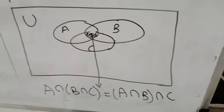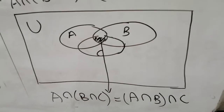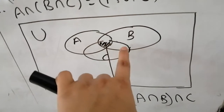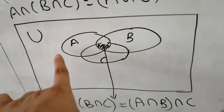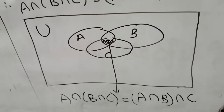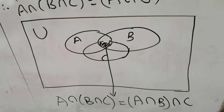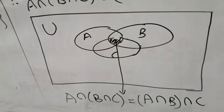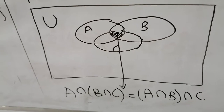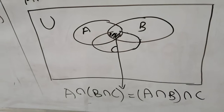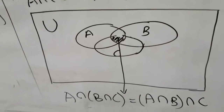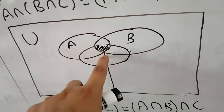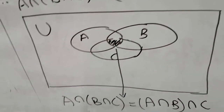Using a Venn diagram, we first represent B intersection C as a highlighted portion. When we take A intersection with B intersection C, only the common highlighted portion remains. This Venn diagram confirms the associative property for intersection — the highlighted portion is the same on both sides.